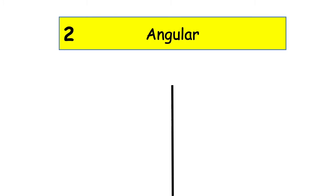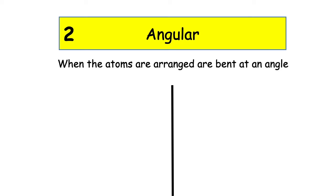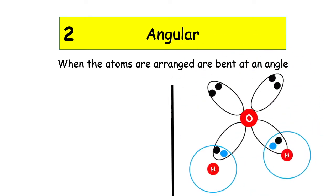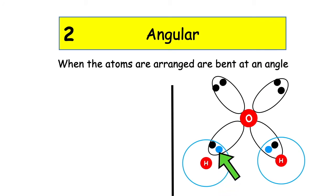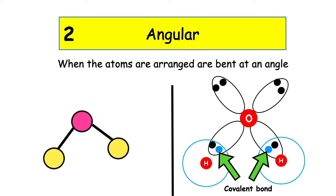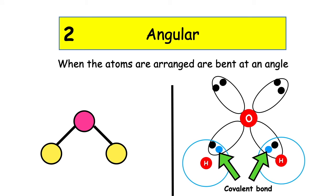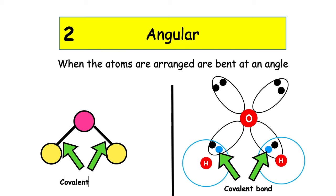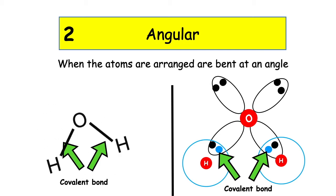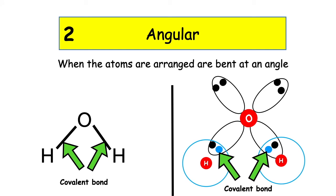The second shape we're going to focus on is when the central atom has two bonds. This is known as angular — when atoms are arranged bent at an angle. An example is water. Oxygen is the central atom and has two bonds with two different hydrogen atoms, forming two covalent bonds. We represent this with oxygen as the central atom and two lines coming out to hydrogen atoms. The lines represent the shared pairs of electrons. In an exam, we write the oxygen in the middle with two lines and the chemical symbol H for each hydrogen. This shows our angular shape.